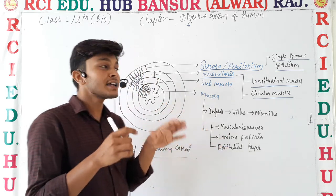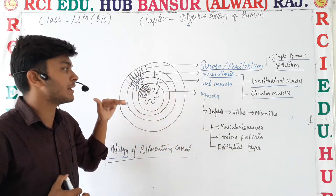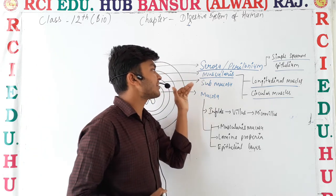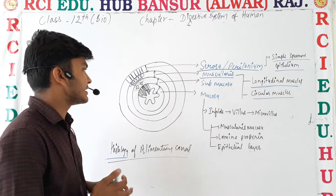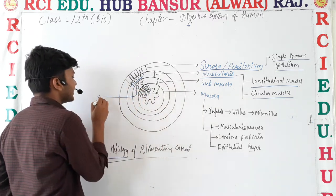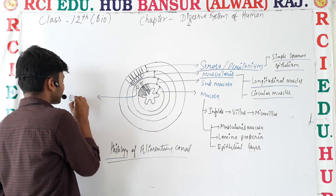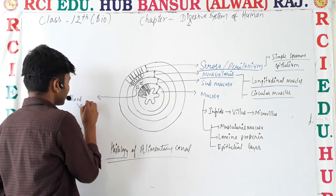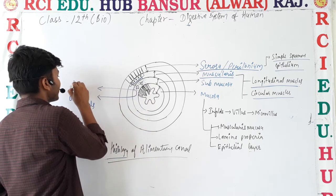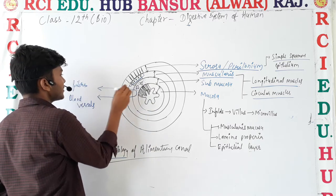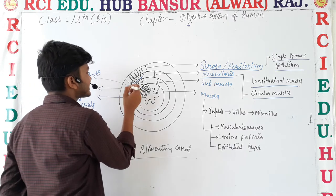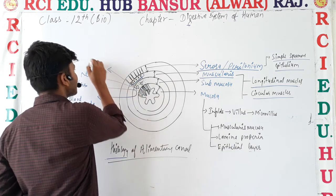The third layer is submucosa, which is found beneath the muscularis. This layer contains blood vessels, fibers, nerves, and connective tissue.